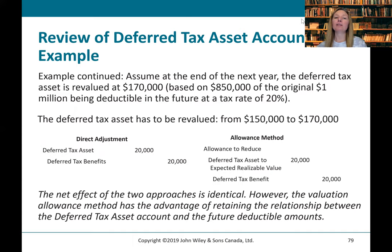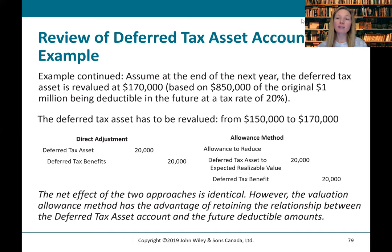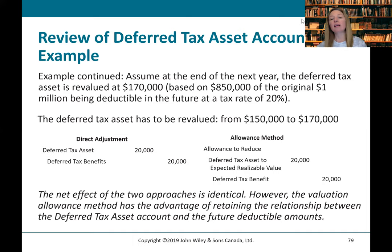At the end of the next year, the deferred tax asset is revalued to $170,000 based on $850,000 of the original $1 million being deductible at a 20% tax rate. We write it up from $150,000 to $170,000. Under IFRS: debit Deferred Tax Asset, credit Deferred Tax Benefit for $20,000. Under ASPE with the allowance: reduce the allowance by $20,000 and credit Deferred Tax Benefit of $20,000.